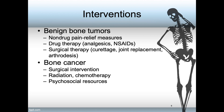Interventions include non-drug pain relief measures and drug therapy, such as analgesics and NSAIDs. Non-drug pain relief measures include positioning and complementary and alternative therapies. And it may be that surgical therapy is going to be required, including removal of the cancerous area or the tumor, joint replacement therapy, and arthrodesis or bone grafting.